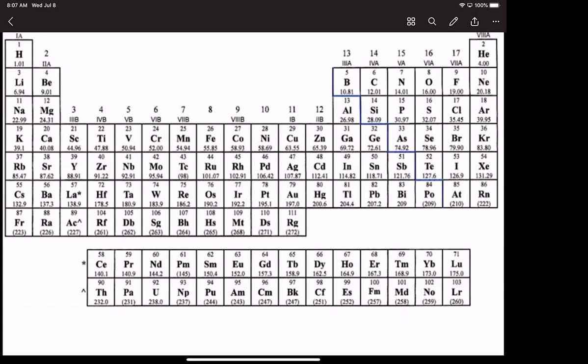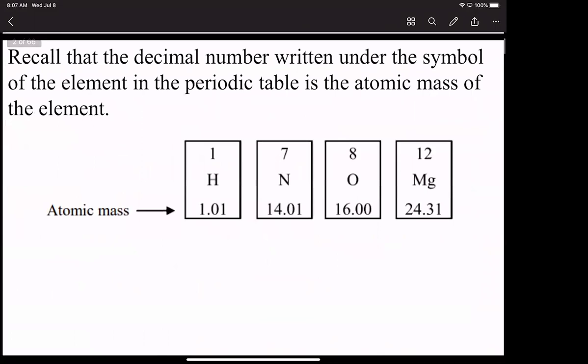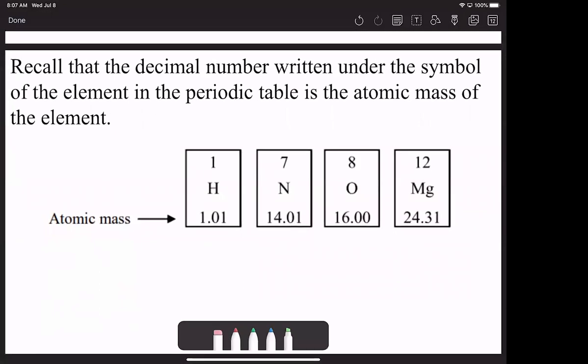When we're looking at the periodic table and viewing all the information here, I could easily ask you what the mass of hydrogen is, and according to the periodic table, we look at the mass and we can see it's 1.01, what we call atomic mass units. Nitrogen is 14.01 atomic mass units, and we get this information strictly from the periodic table.